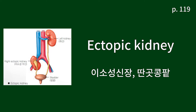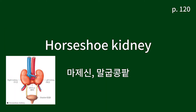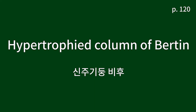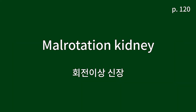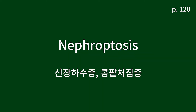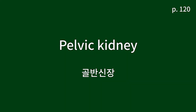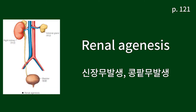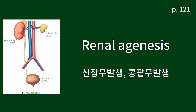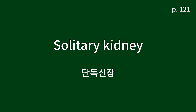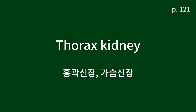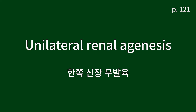Ectopic kidney. Horseshoe kidney. Hypertrophied column of Bertin. Malrotation kidney. Nephroptosis. Pelvic kidney. Renal agenesis. Renal ectopia. Solitary kidney. Thoracic kidney. Unilateral renal agenesis.